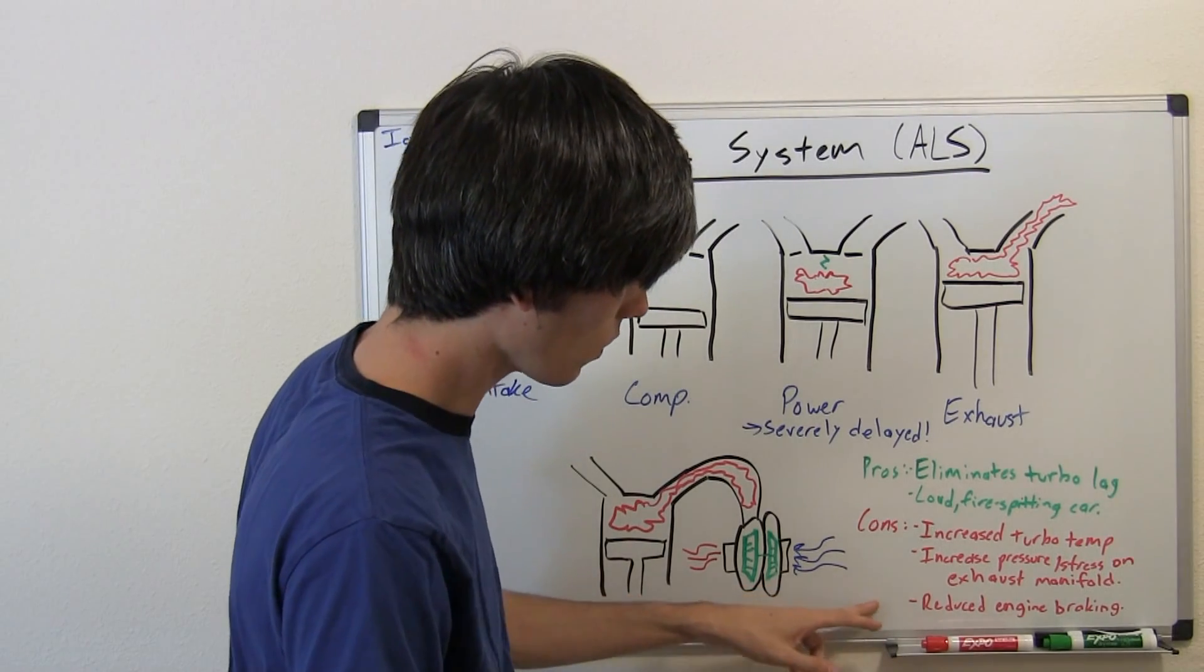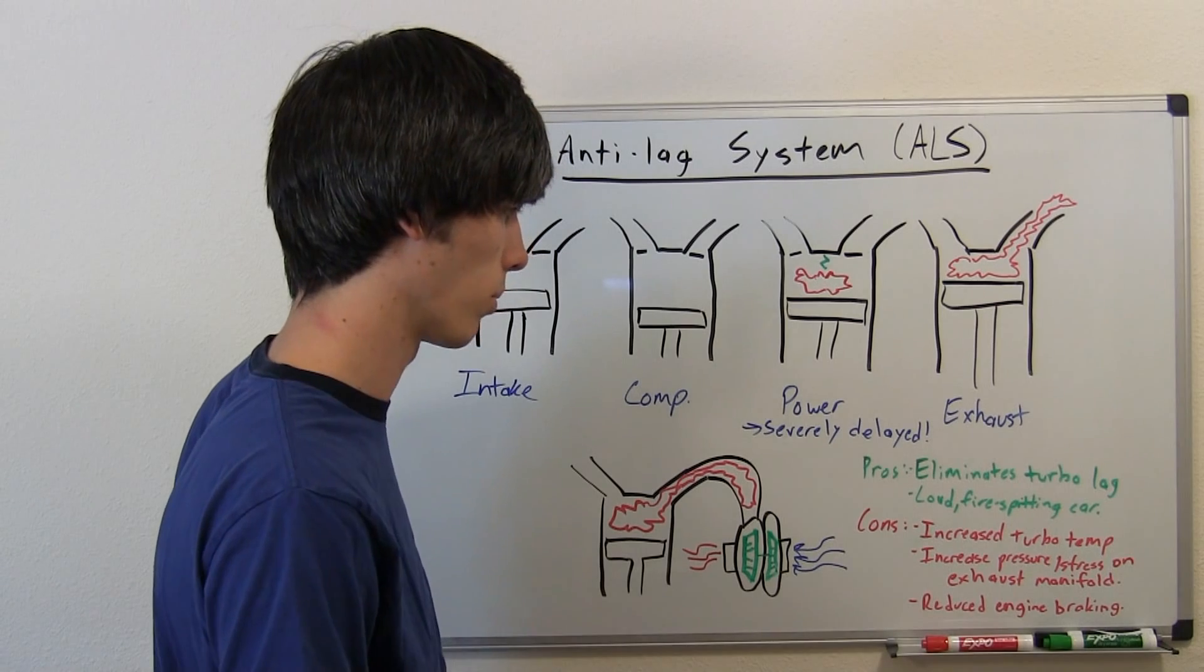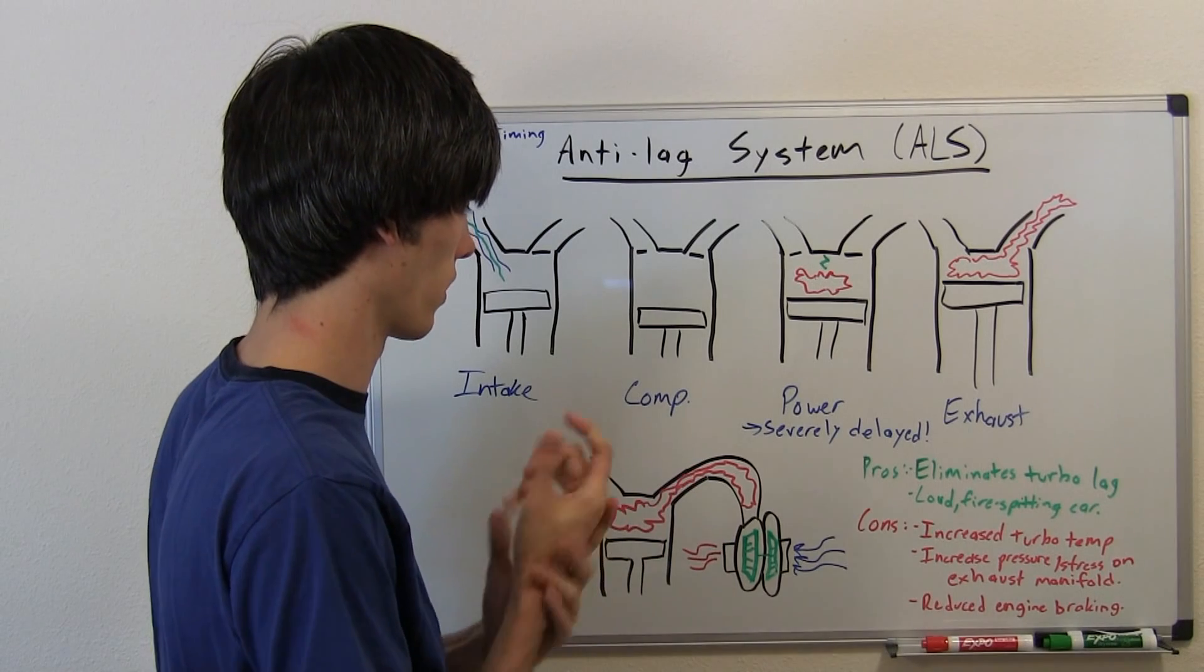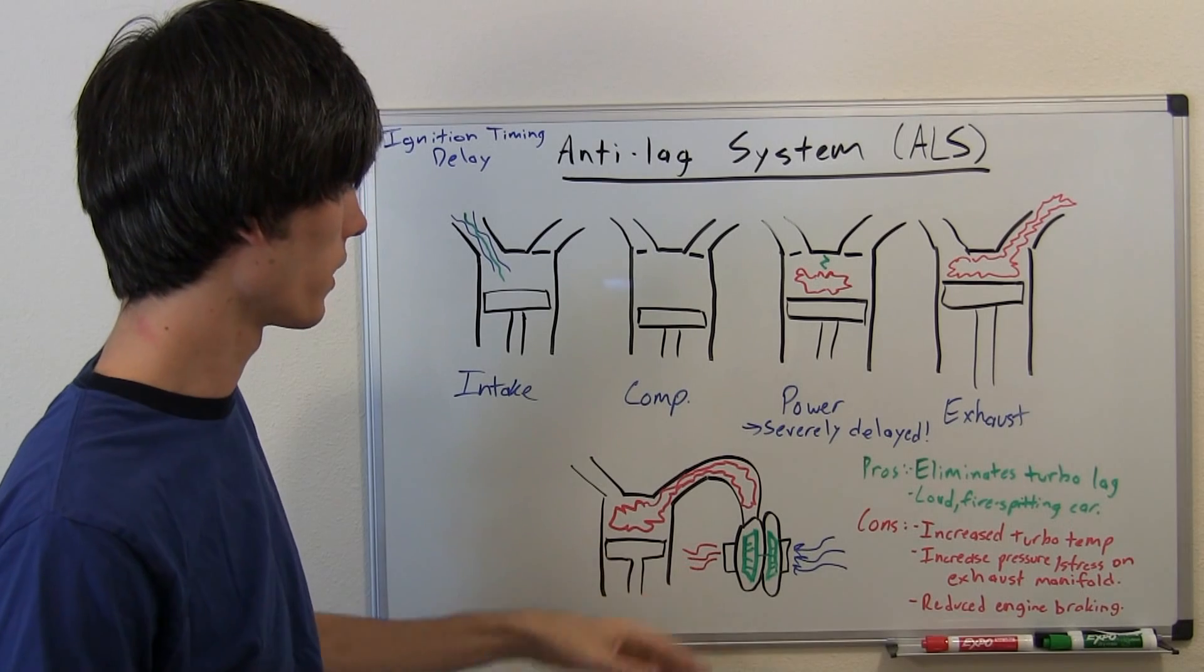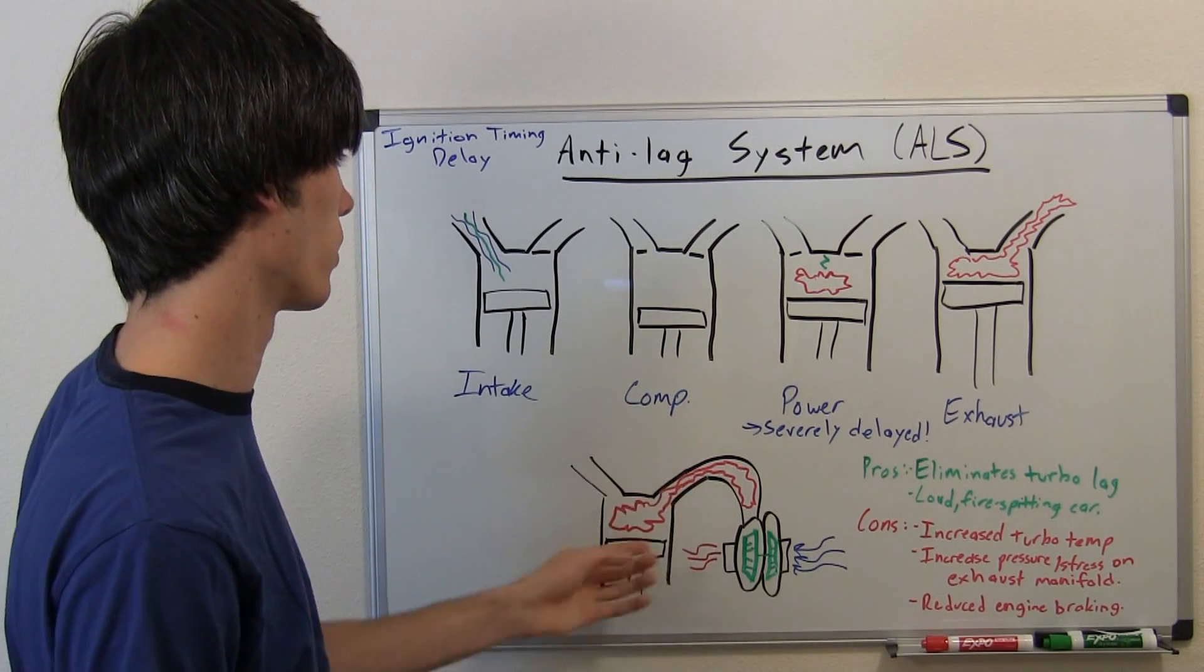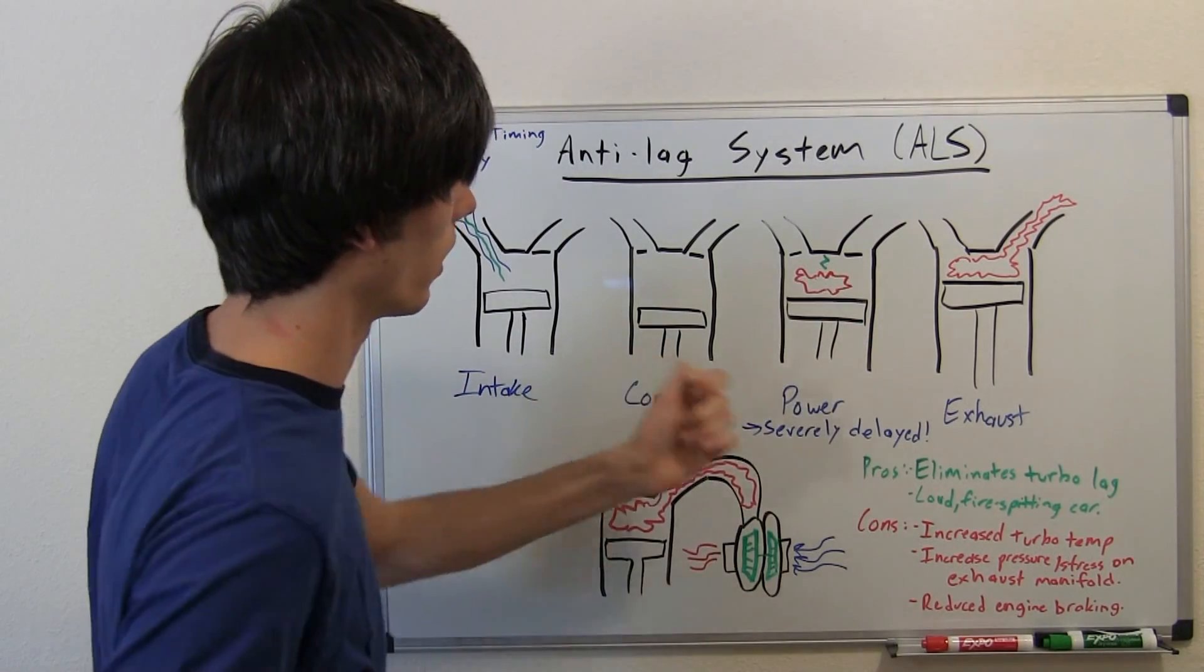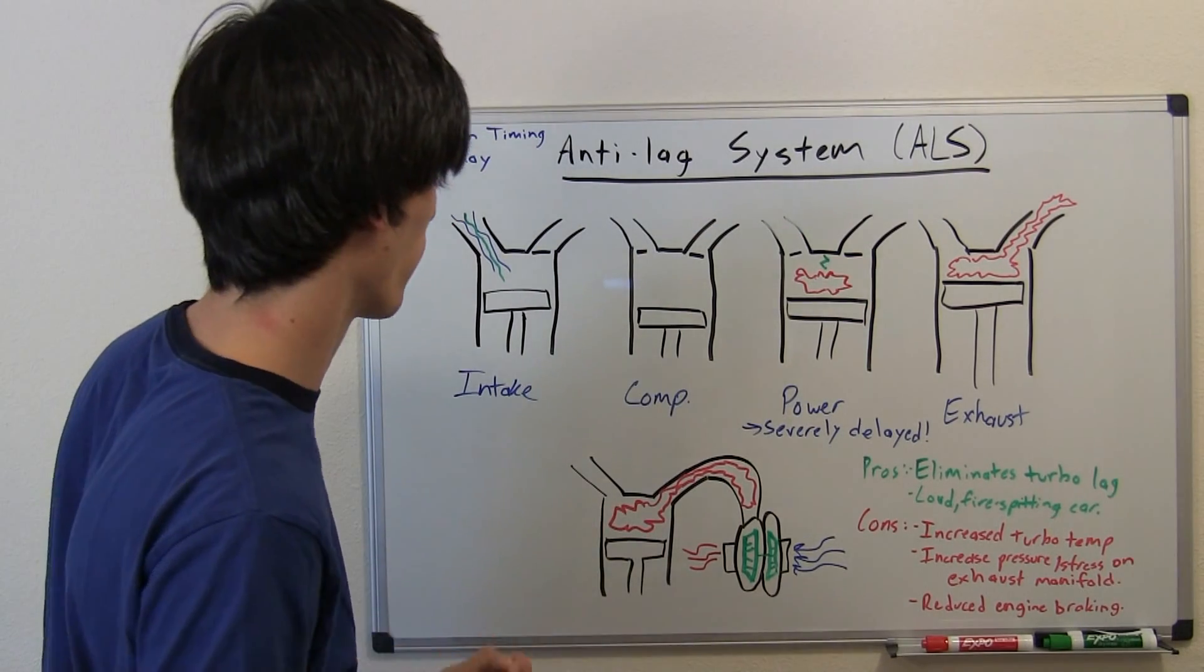So one more thing, which isn't really that big of a deal, but you would have reduced engine braking. So if you like engine braking—just leaving your car in gear and letting the gearing and the drivetrain do the braking for you rather than actually pressing the brake pedal—with an anti-lag system that's not going to be as effective because you've got the engine basically running, and so it's not going to have as much exhaust resistance that it typically would without the ALS.